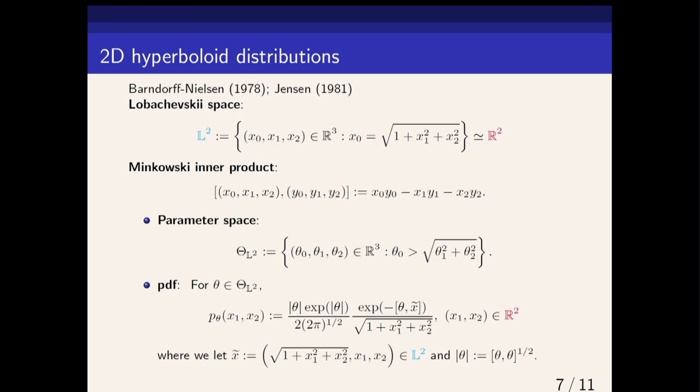Now I want to introduce another kind of distribution. This time I will take the hyperboloid model of hyperbolic geometry, not the Poincaré upper plane. This has been studied in the late 80s and 90s by Barndorff-Nielsen and Jensen. We consider the Lobachevski space with the Minkowski inner product, where you have the signature of your inner product.